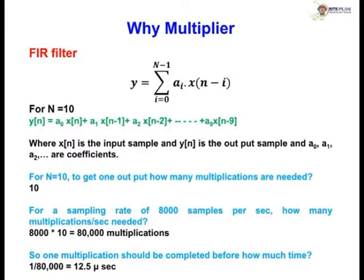Who can answer? Raise your hand — don't start answering. The answer is 10, because a_0 is multiplied with x(n), a_1 multiplied with x(n-1), and a_9 multiplied with x(n-9). So there will be 10 multiplications required.